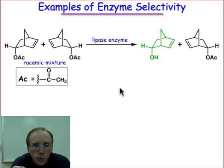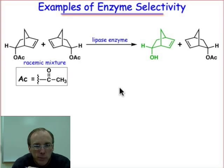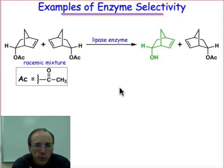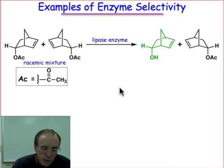I mentioned before that the hallmarks of enzyme-catalyzed reactions are speed and selectivity. The last few webcasts have been talking about speed, and so in this webcast we're going to look at some examples of really remarkable selectivity. Selectivity is sometimes referred to as substrate specificity, and there's no better example than the first one we're going to look at here.